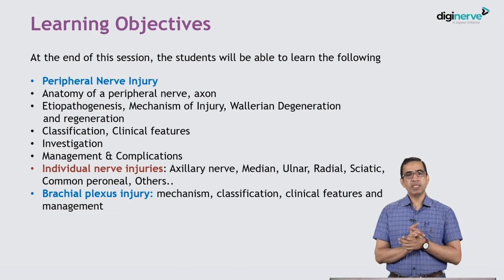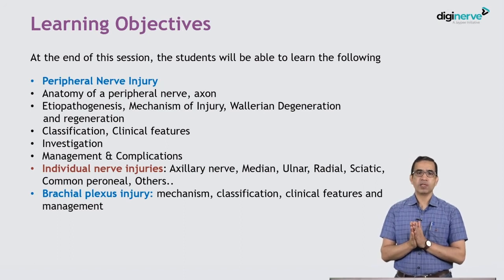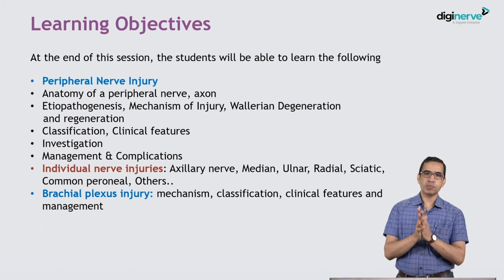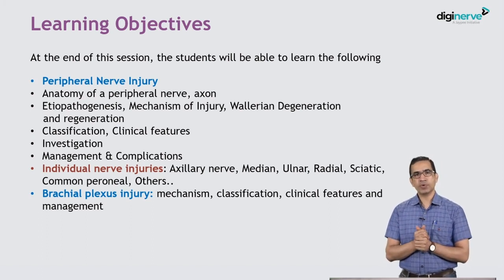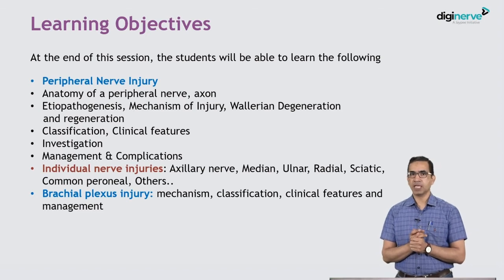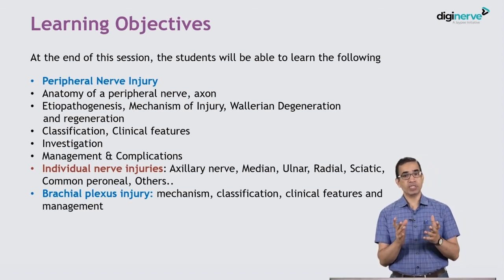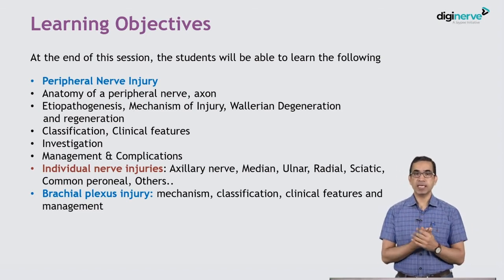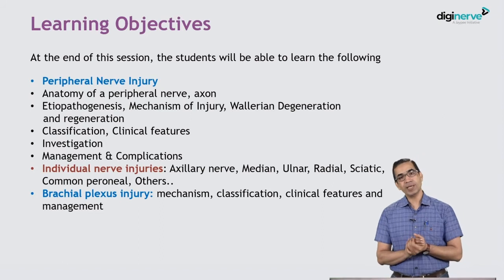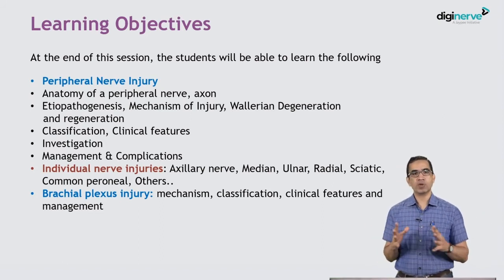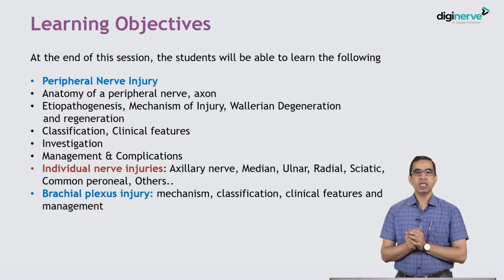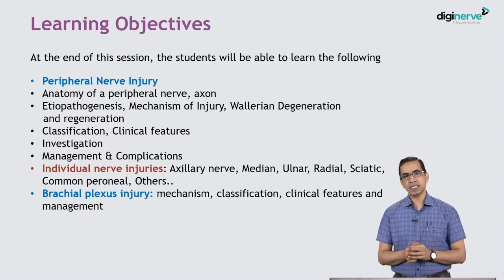You can figure out what investigations should be done and what will be the likely prognosis and which treatment will work better. We will also deal with individual nerve injuries of the upper limb, lower limb, and then some special nerve injuries which are usually not asked in your MBBS Viva but are important for clinics and definitely for your MCQs. We will finish this entire discussion with slides on brachial plexus injury.